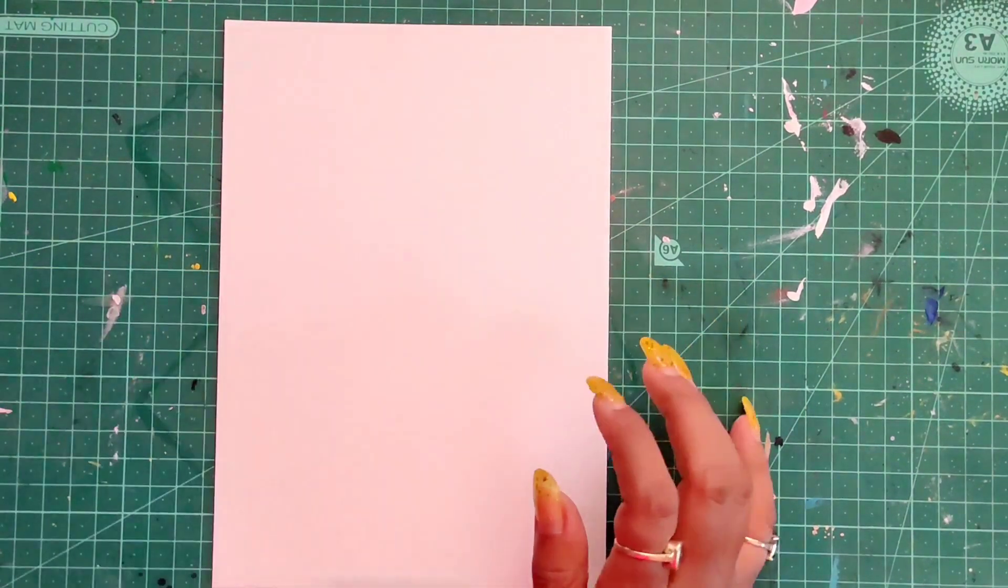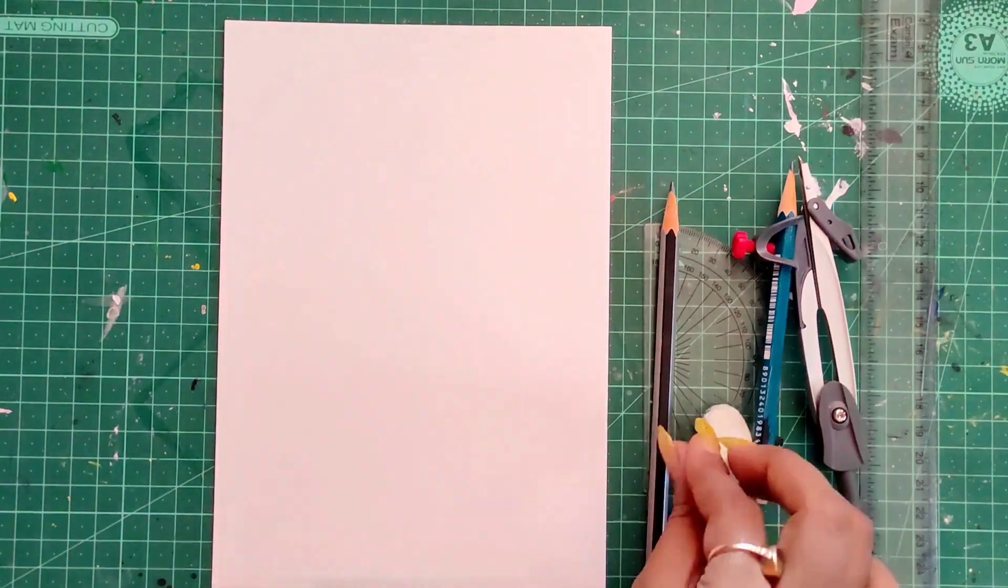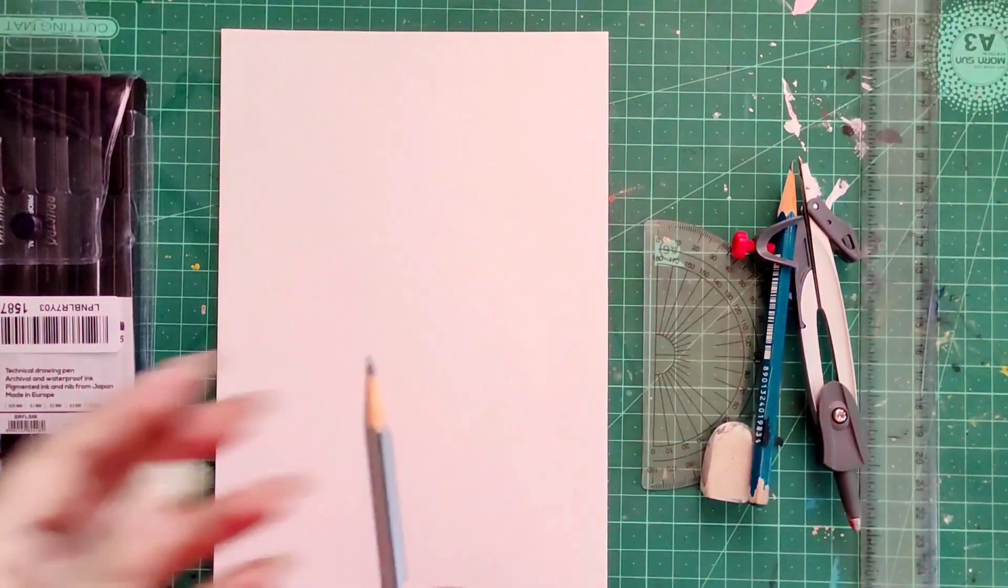Hello, this is Sushmita. Welcome back to my channel, Chitra Karma. In this video, I will show you how to create a perfect grid for your mandala. For this, you will need a protractor, compass, paper, pencil, and ruler.